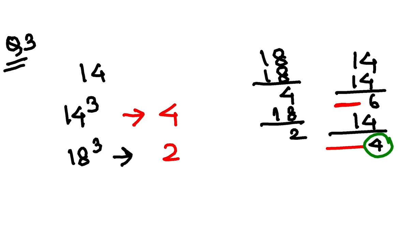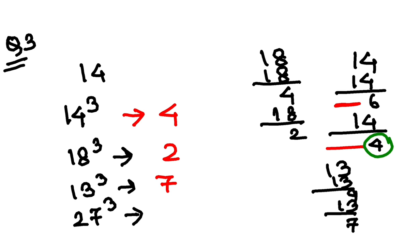Applying same logic on 13. 13 into 13, last place is 9. Again times 13, last place is 7, so this will give you 7. And then 27, please try on your own. From 27 you will get last place as 3.